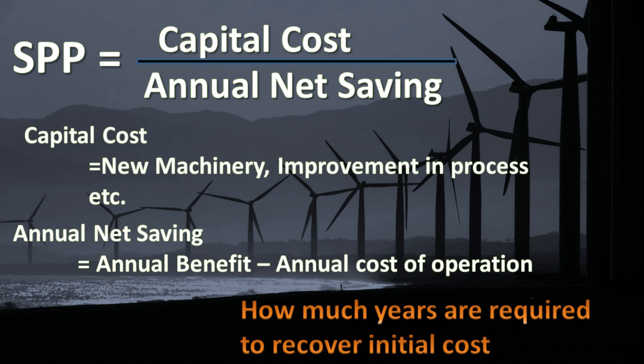Capital cost is the initial investment in a project, which may be new machinery, equipment, or improvement in process. The annual saving is annual benefit minus annual cost of complete operation of the project. SPP is expressed in terms of years.